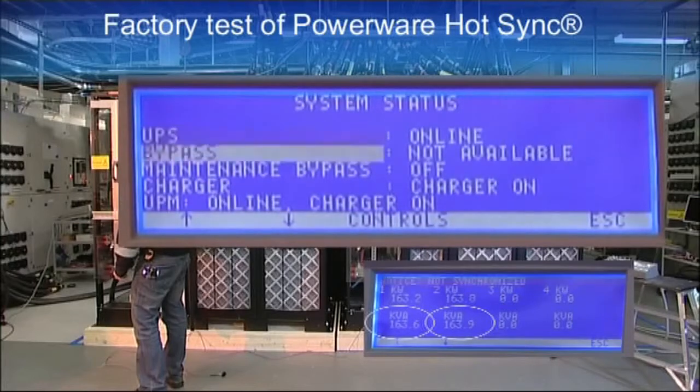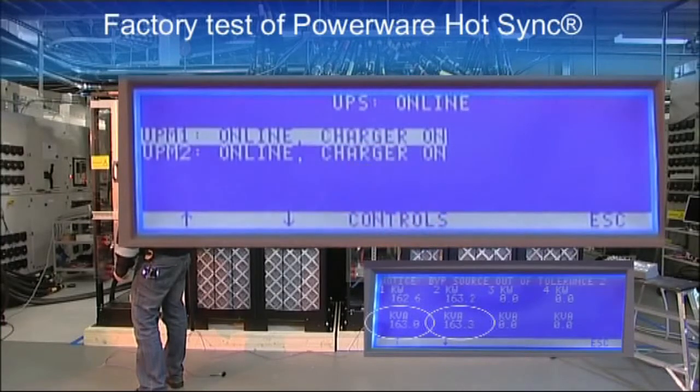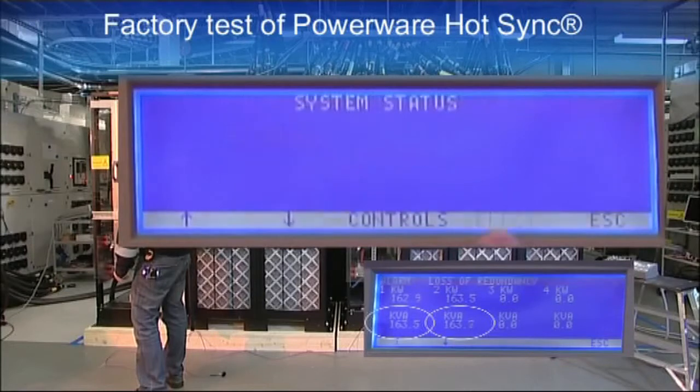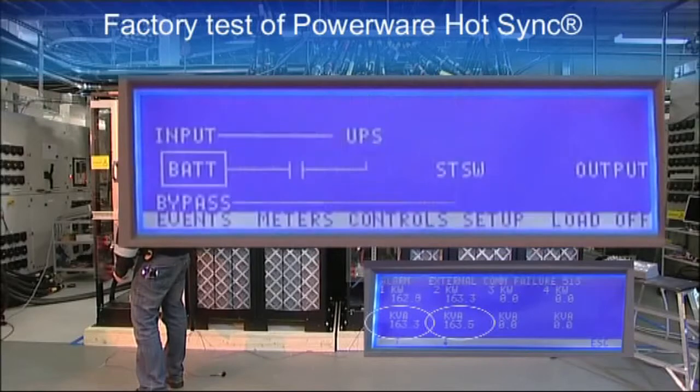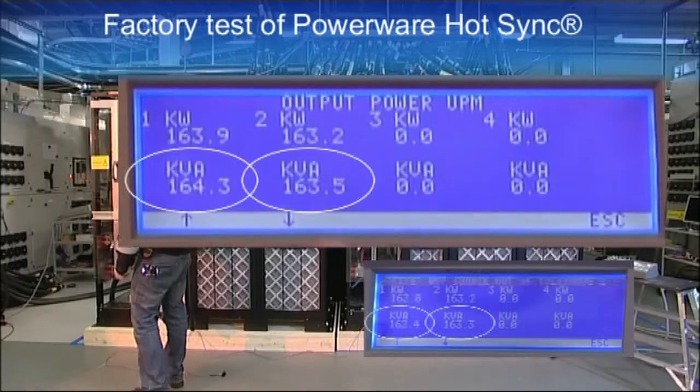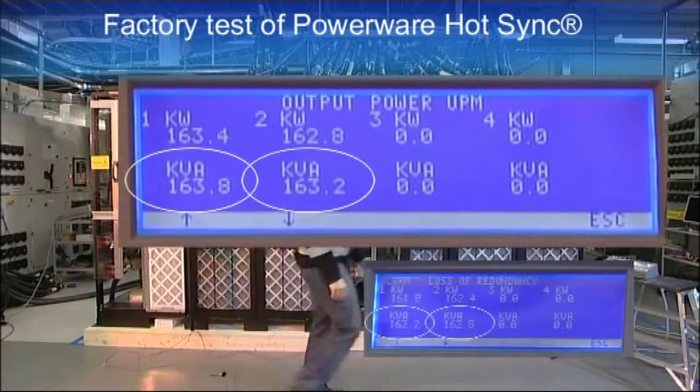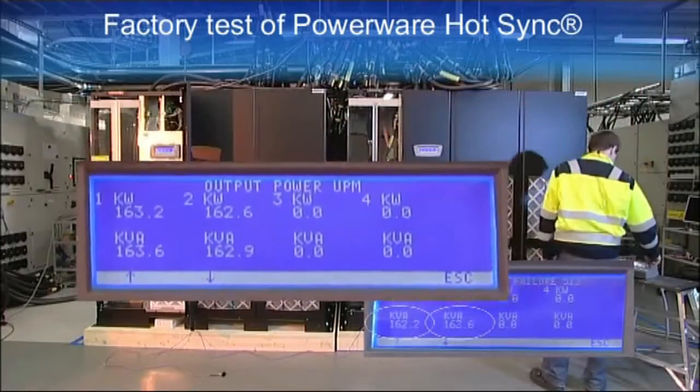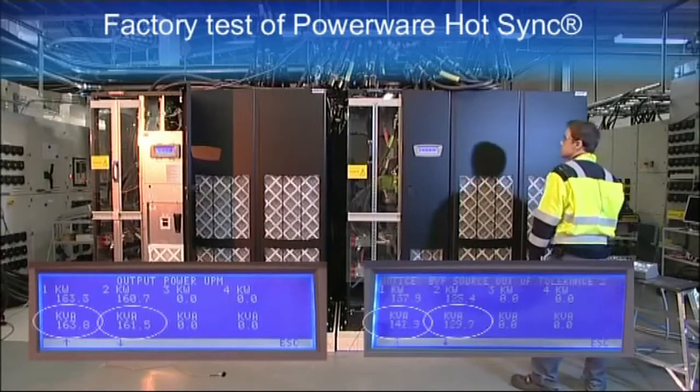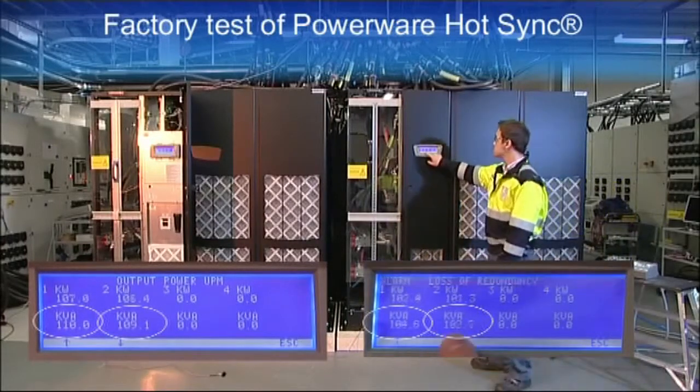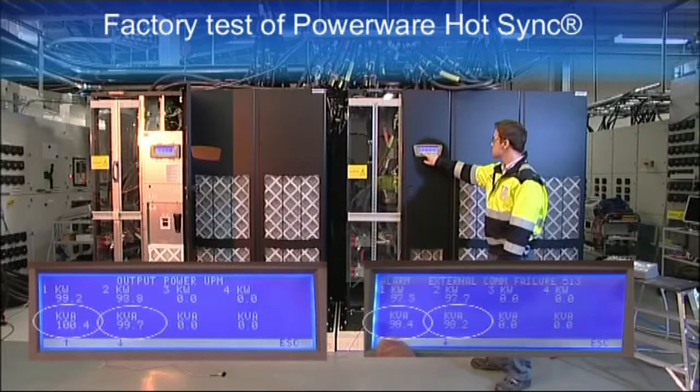UPS won't allow shutting down a power module because the alarm is active. The system has redundancy, but without communication, UPSs don't know it. The load level is decreased to the original 100 kilowatts per UPM level and loss of redundancy clears.